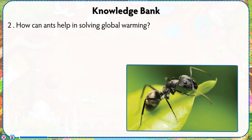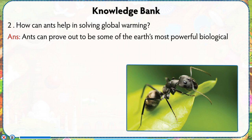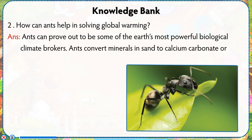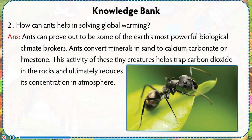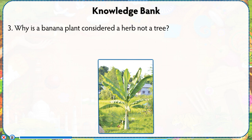How can ants help in solving global warming? Answer: Ants can prove to be some of the earth's most powerful biological climate brokers. Ants convert minerals in sand to calcium carbonate or limestone. This activity of these tiny creatures helps trap carbon dioxide in the rocks, and ultimately reduces its concentration in the atmosphere.